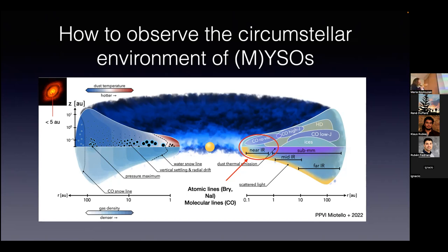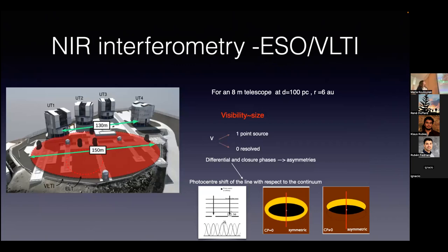Here is an example of HL Tau with ALMA. To probe the accretion and ejection processes and understand the formation of massive stars, we really need to go to distances of up to about one AU. To do so we need very high angular resolution — in an ALMA image this inner region would be unresolved. The only technique we can use to really probe these small inner regions of the disks is infrared interferometry. The resolution is dependent on the diameter of the telescope, so for the VLT and VLTI in Chile, the UT telescopes with 8-meter diameter at 100 parsec give a radius of 6 AU.